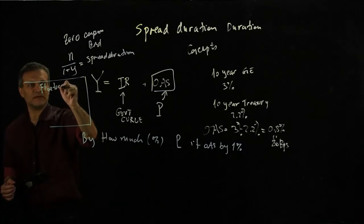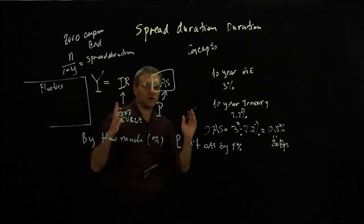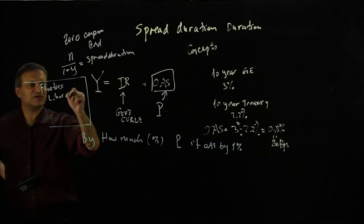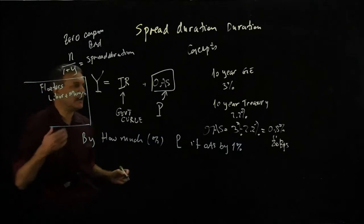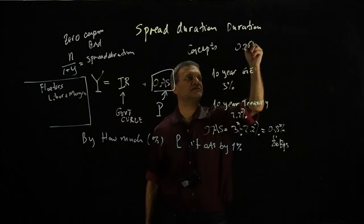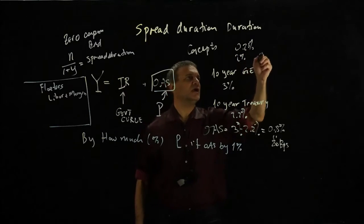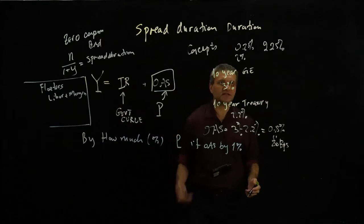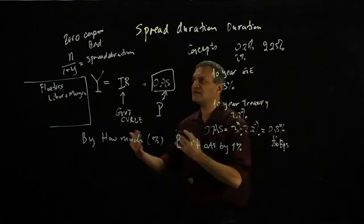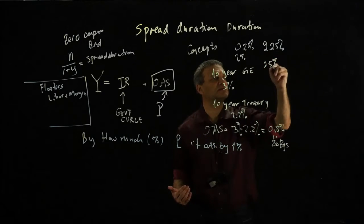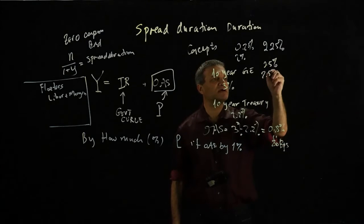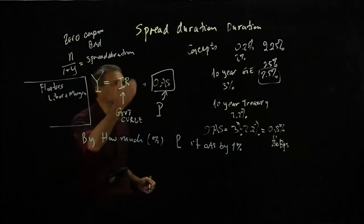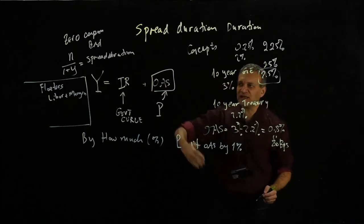With floaters, just to remind you, you have LIBOR plus a margin. For example, if your LIBOR is 0.225% and your margin is 2%, you are going to get a coupon of 2.25% of your principal in the next year or next three months. Now if the Fed hikes tomorrow and the LIBOR goes to 0.5%, you are going to get a coupon of 2.5%. So the floater reflects changes in the interest rate, and it does it every three months.